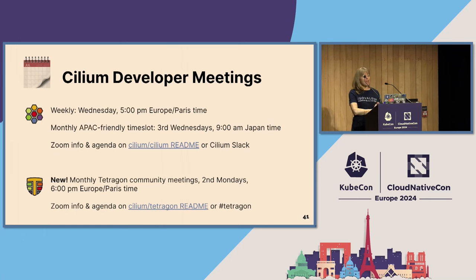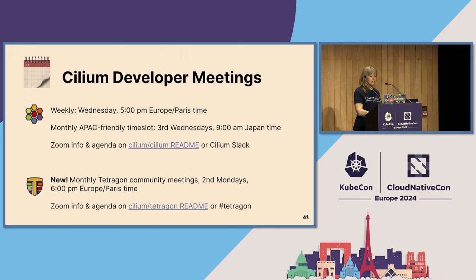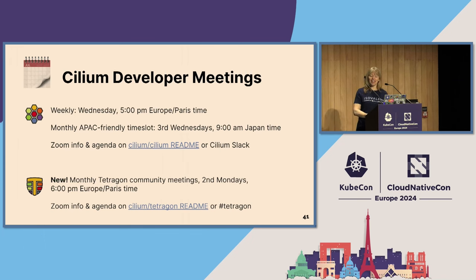The slide is talking about developer meetings. We have a weekly developer meeting that we've been holding for a very long time on Wednesdays. About a year ago, we started doing an Asia-Pacific-friendly time zone as well, which happens monthly. And we've just held the first of the monthly Tetragon meetings, which happen on the second Monday of every month. You'll find the agendas and all the details in the readmes for the Cilium or Tetragon projects. If there's a topic you want to add, simply add it to the document linked from the readme and you'll be on the agenda.